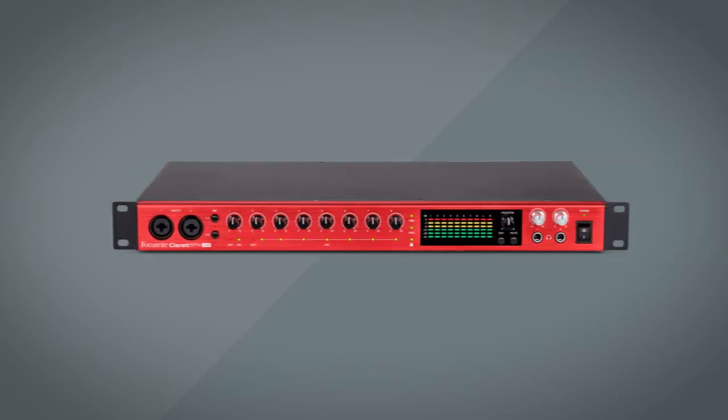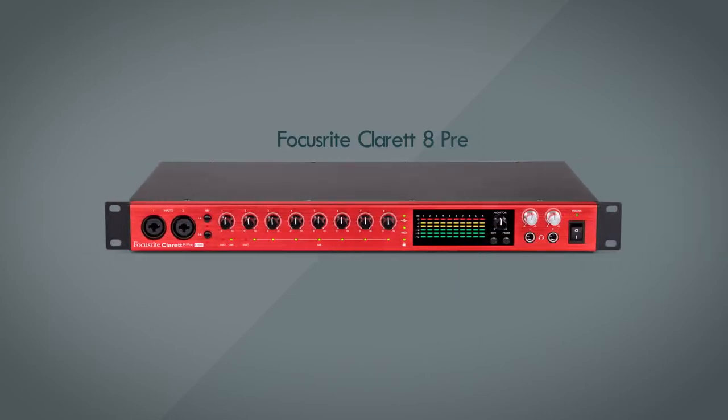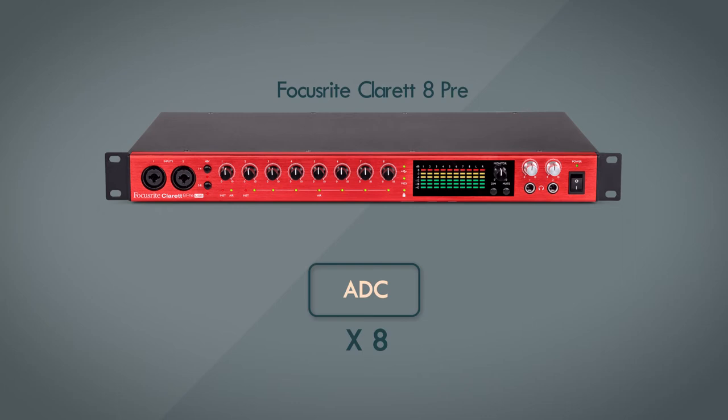Now consider this multi-track recorder. You've got eight inputs, and you can record a drum kit or a choir. Again, to separate the signals, you need eight different ADCs. As we saw in the earlier videos, ADCs are fairly complex circuits with very specialized components. So every new input drives the cost up for the device.